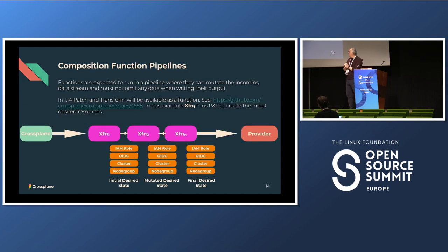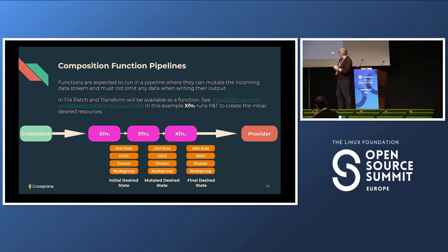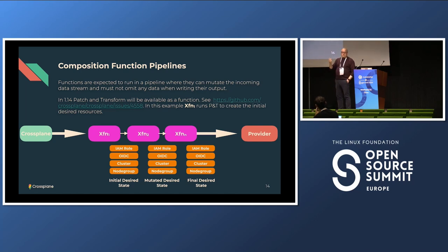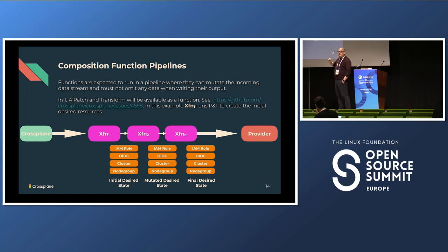The key thing about Crossplane functions is they run like a Unix pipeline — that's the closest analogy. Your function accepts data — think of those manifests as a big chunk of YAML — and you mutate that data and pass it out the other side. In 1.14, the patch-and-transform engine is being pulled out of Crossplane core as a functional version. So in a pipeline, the first function creates the resources, the next function mutates them — maybe adding labels or checking security settings — and then the final desired state gets passed to the provider to provision in the cloud.